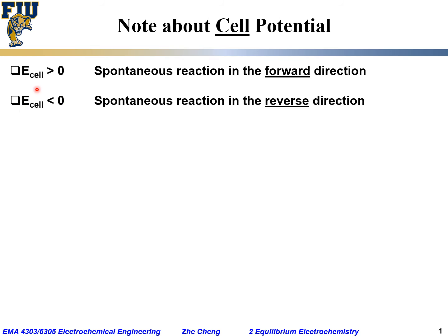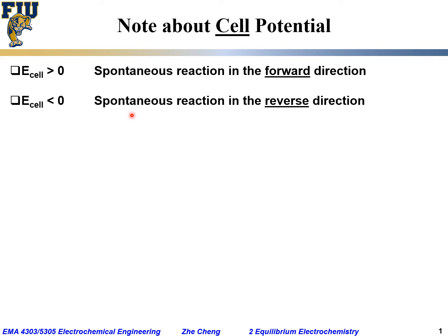On the other hand, if the cell potential you calculated is negative, it means the reaction as written is not spontaneous. Putting it another way, the reverse reaction would be spontaneous and would have a natural tendency to proceed if you connect the two electrodes.